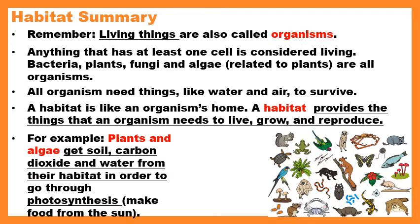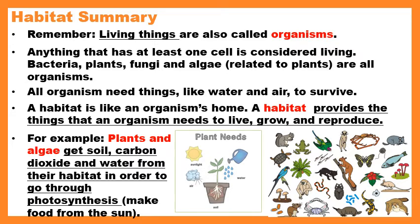Let me give an example of what needs are met in another organism's habitat. Plants and algae — remember algae are related to plants and also go through photosynthesis — this is like the green stuff you'll see growing on top of a pond. Plants and algae get soil, carbon dioxide, and water from their habitat in order to go through photosynthesis. Just a reminder: photosynthesis is when plants and algae make their own food from the sun, but they still need soil, carbon dioxide, and water to do that.